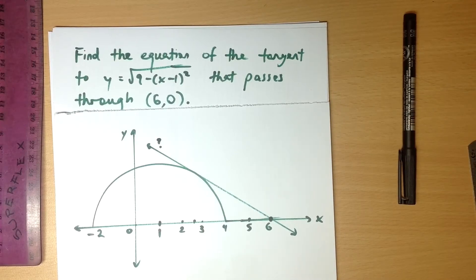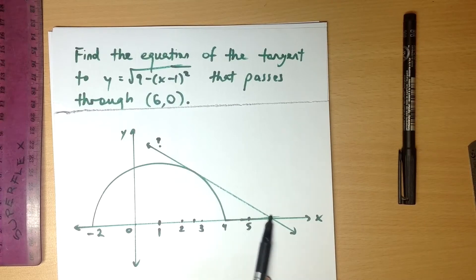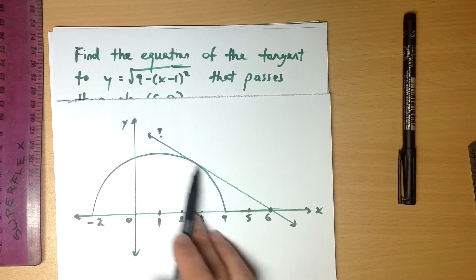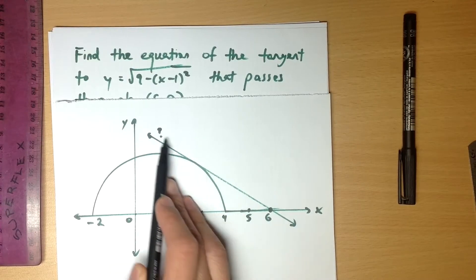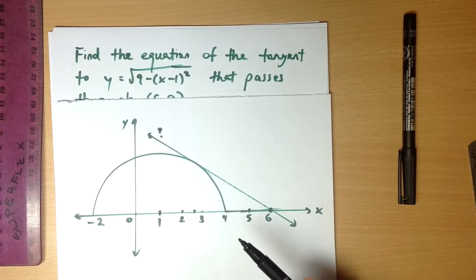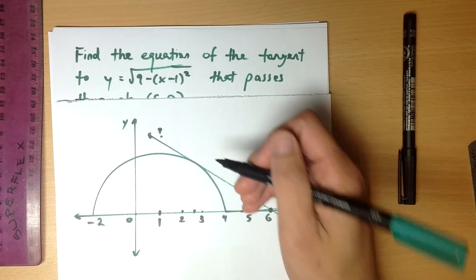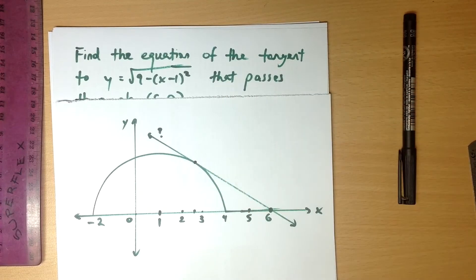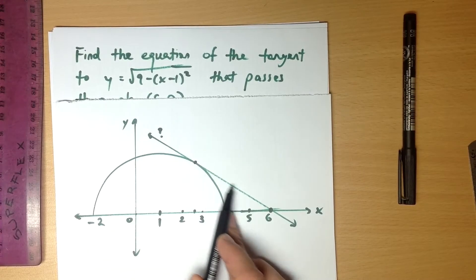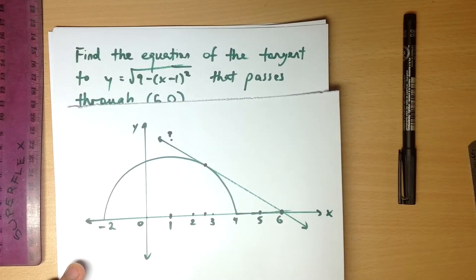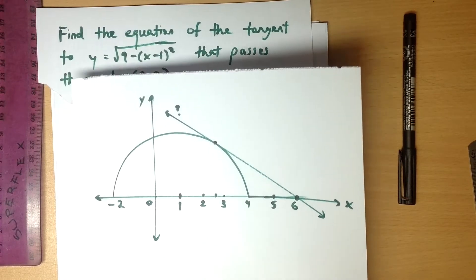So how can I go about this? My first method is going to be using calculus. This is a Year 11 exam, so students know calculus by now. To find the equation of a tangent — really any straight line — you need a point it goes through, which is (6, 0), and you need its gradient. To find the gradient, that's one of the things we use calculus for. If we can work out the gradient right at the point of tangency on the semicircle, that's the gradient of the whole tangent line.